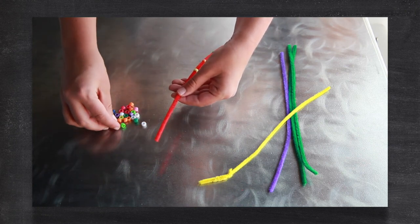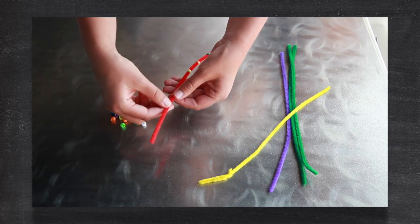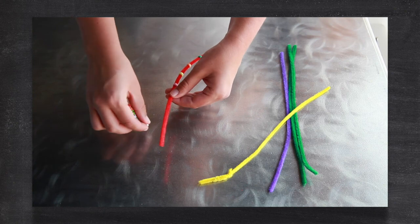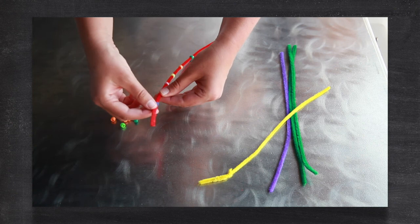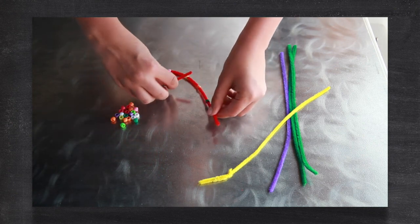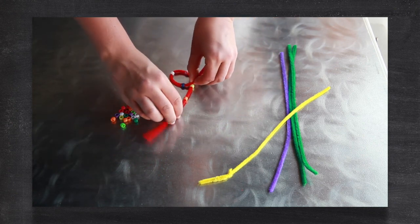When proteins are made, the amino acids can be assembled in a variety of ways, depending on what the function of the protein is for the body. Once all the amino acids are assembled, the newly formed protein changes shape and can begin doing the work that it needs to.